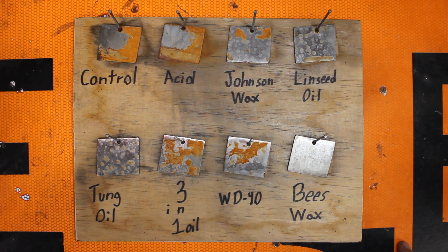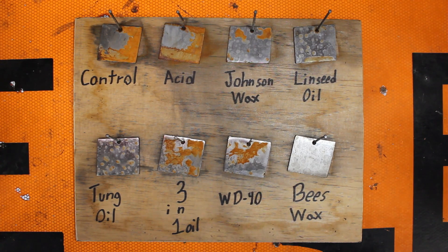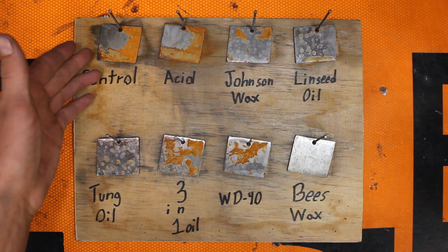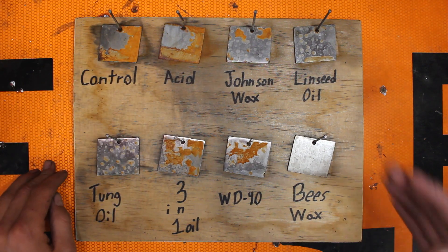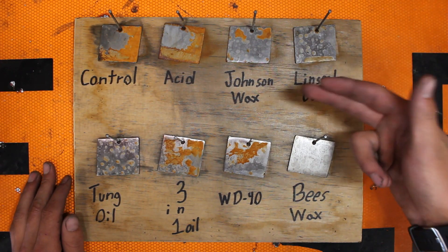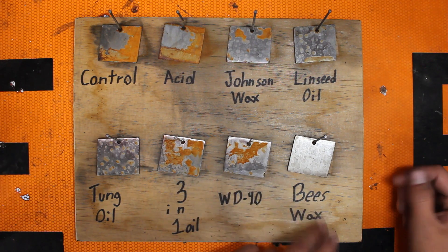All right guys here's the results from after a week of letting it sit outside and spraying it with water three times a day. The control as you can tell very rusted, I actually think the acid is a little more rusted. This is our Johnson's wax, Johnson's paste wax, linseed oil, our tung oil, three-in-one oil, WD-40, and beeswax.